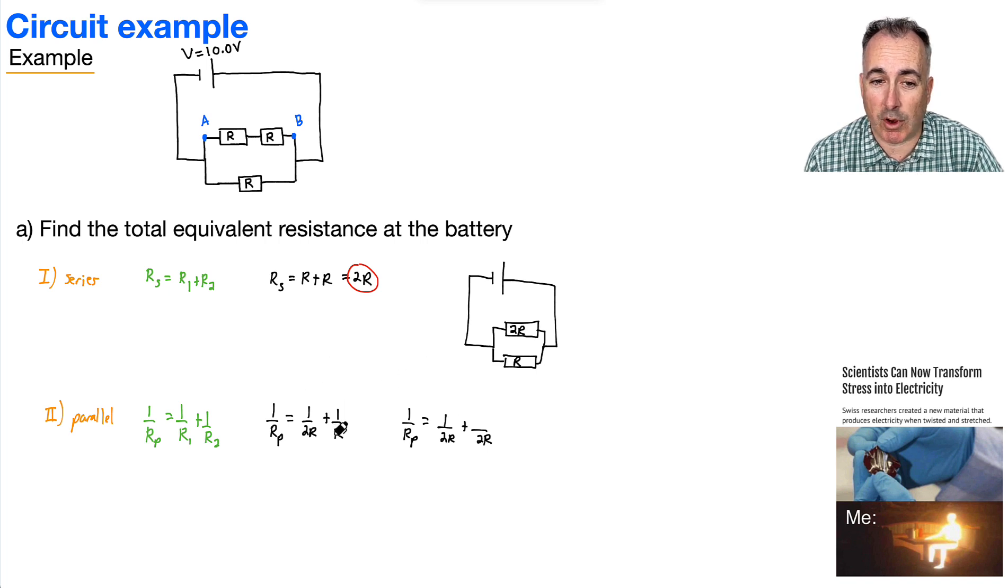However, this next one, to get from R to 2R, what do I do? I have to multiply by 2. That means I've got to multiply the top. Then what's 1 times 2? It's 2. Okay, so let's keep going then. That means we have 1 over RP then is going to equal, let's see, now that I have a common denominator, I can put the 2R on the bottom, and 1 plus 2 is 3.